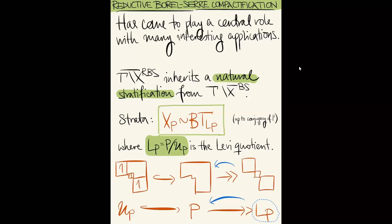This summarizes the difference between the Borel-Serre and the reductive Borel-Serre compactification. The Borel-Serre compactification remembers the parabolic subgroups; the reductive Borel-Serre compactification only remembers the Levi quotient. This is also why it's called 'reductive' — the Levi quotient is a reductive algebraic group, whereas parabolic subgroups are in general not reductive. The key point is that these Levi quotients are much better-behaved algebraic groups than the parabolic subgroups, and a lot easier to work with.